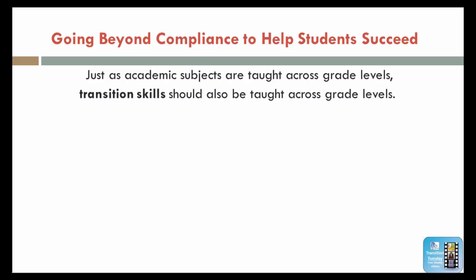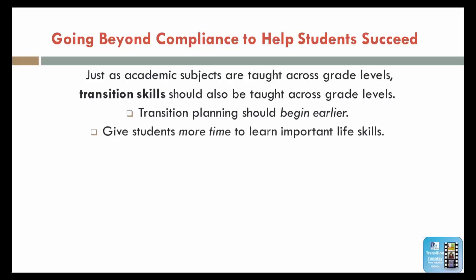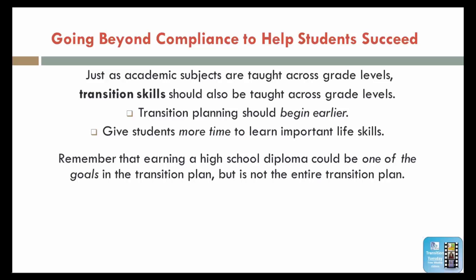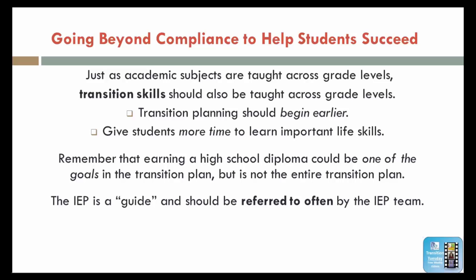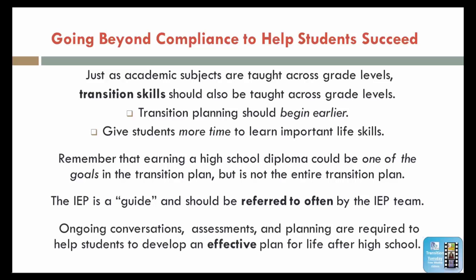The federal government requires transition planning to begin when the student is 16. Most states start when the student is 14. Ideally, it should begin earlier, to give the students more time to learn important life skills. Remember that earning a high school diploma could be one of the goals in the transition plan, but it is not the entire transition plan. The IEP is a guide and should be referred to often by the IEP team, including the student. Ongoing conversations, assessments, and planning are required to help students develop an effective plan for life after high school.